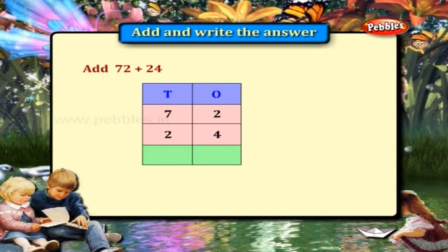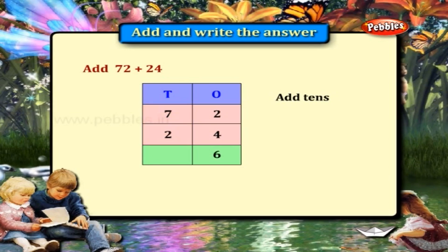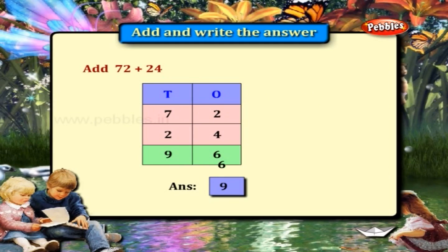72 plus 24. Add the 1's place: 2 plus 4 is equal to 6. Add the 10's place: 7 plus 2 is equal to 9. The answer is 96.